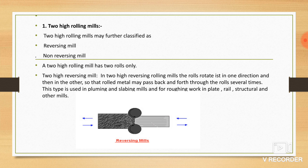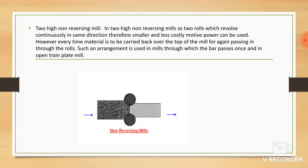Two high rolling mill is further classified as reversing mill and non-reversing mill. In the two high reversing rolling mill, the rolls rotate in one direction and then the other, so that the material may pass back and forth through the rolls. This is the diagram of reversing mill. In the two high non-reversing mill, all rolls revolve continuously in the same direction. Therefore, small and less costly motors can be used. This is the diagram of non-reversing mill.